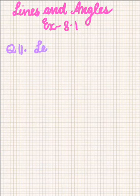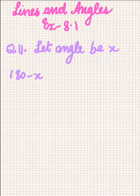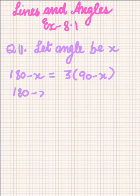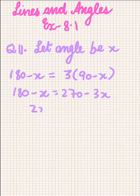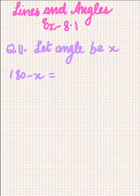Question 11: if the supplement of an angle is 3 times its complement, find the angle. Let the angle be X. The supplement of the angle will be 180 minus X. It is equal to 3 times its complement, so 3 times (90 minus X), which gives 270 minus 3X. Solving, 180 minus X equals 270 minus 3X, so 2X equals 90, and X equals 45 degrees. This is the required answer. Thanks for watching.